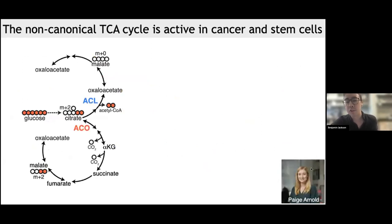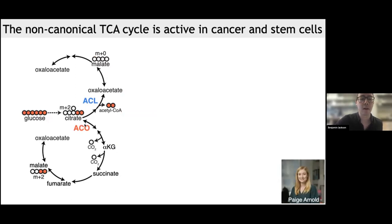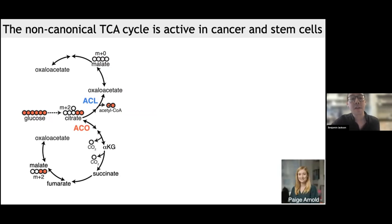This in silico analysis was striking, but we really wanted to test whether this non-canonical TCA cycle was actually happening in cells. This work was led by former graduate student Paige Arnold, who realized that one way to monitor flux through the canonical or non-canonical TCA cycle was to trace 13C-labeled glucose. 13C-labeled glucose is converted to M+2-labeled citrate. If this citrate is processed by ACO2 in the canonical TCA cycle, you see retention of the two labeled carbons as M+2 malate. However, if citrate is exported and processed by ACLY, these two carbons are liberated as acetyl-CoA, resulting in loss of M+2 label downstream and M+0 malate instead. So you can read out engagement of the non-canonical TCA cycle by looking at loss of the citrate M+2 label.